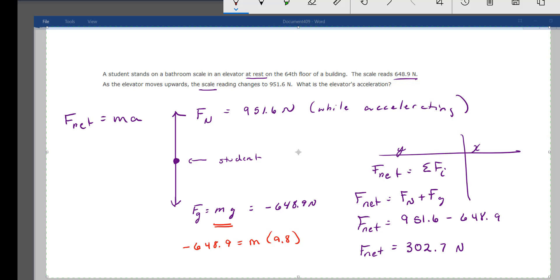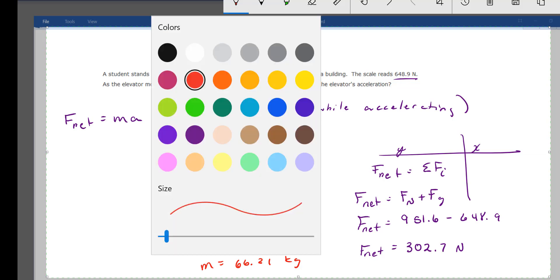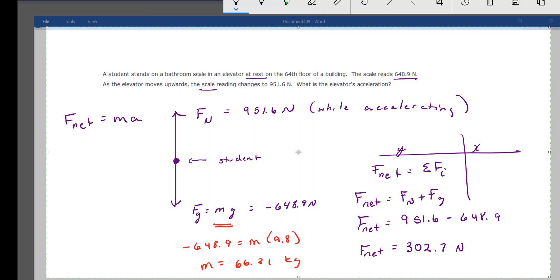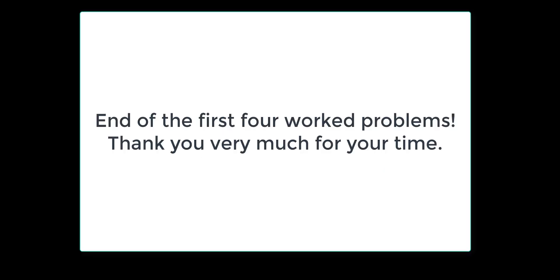So I plug in those numbers and I get a mass equal to 66.21 kilograms. I can now take that 66.21 kilograms, go back up to the other equation on the left-hand side, F net equals ma, plug in all my numbers, and I get an acceleration of 302.7 divided by 66.21, giving me the number 4.57 meters per second squared. Problem done.